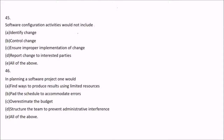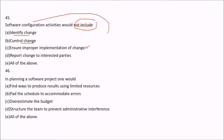Question 45: Software configuration activities would not include which of the following? Options are: A — identify change, B — control change, C — ensure improper implementation of change, D — report change to interested parties, E — all of the above. The answer is C — ensuring improper implementation of change is not a software configuration activity. Identifying, controlling, and reporting change are all correct configuration activities.